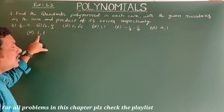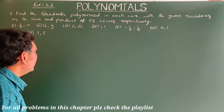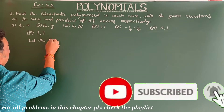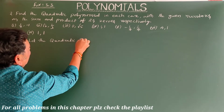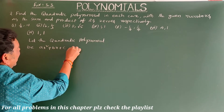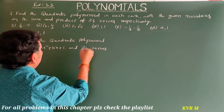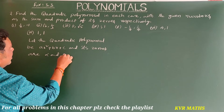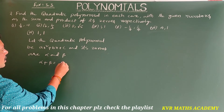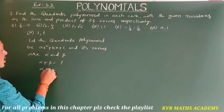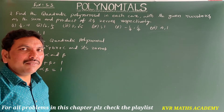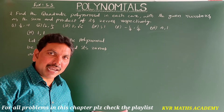Fourth case: sum=1, product=1. Let the quadratic polynomial be ax²+bx+c with zeros α and β. Given α+β = 1 and αβ = 1. The quadratic polynomial of zeros α and β is k(x² - (α+β)x + αβ).